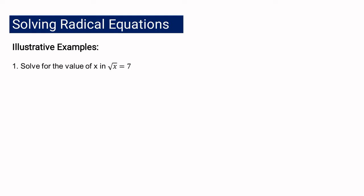Now let us start with a simple radical equation. We are going to solve for the value of x if the equation is: square root of x is equal to 7. We are looking for the value of x that will make the equation square root of x equals 7 true.